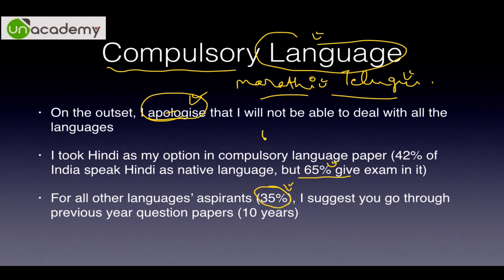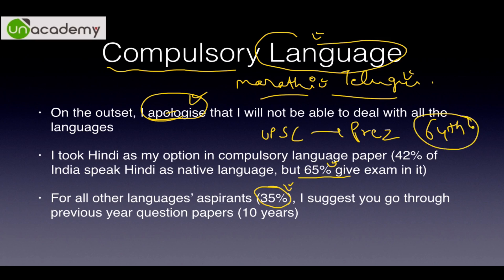The President needs to get a report from UPSC — just check which article this is under Article 320. The annual report by UPSC needs to go to the President. This year's report is the 64th report sent by UPSC to the President — you can Google '64th annual report UPSC President' and get the link. It is roughly a 200-page book you can read.